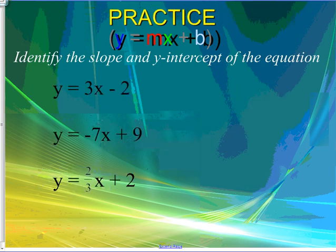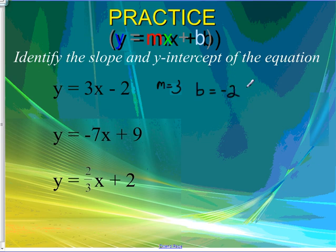So if I were to go through and look at this, if we wanted to identify the slope and the y-intercept of the equation, we would say, well, my m is 3. My slope is 3, and my intercept, my b, we know it's negative 2. So my y-intercept coordinate would be 0, negative 2.